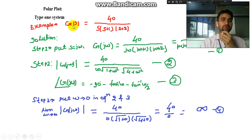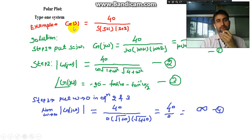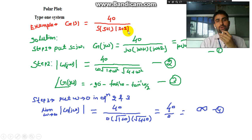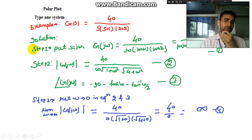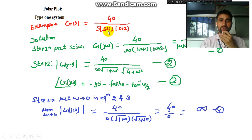We've taken an example: G(s) = 40 divided by s(s+1)(s+2). You may take any other transfer function, but this is one of the simplest examples. We'll start with step one: put s equal to jω in the given transfer function.